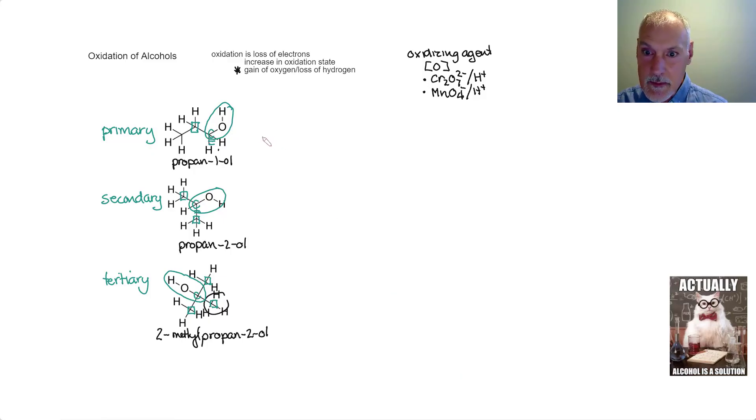When I oxidize a primary alcohol, so I'll bring along my oxidizing agent. I get this product, also with three carbons, but I now form an aldehyde, propanal. To accomplish this, we've lost two hydrogens—that one and that one have been removed—meeting this definition.